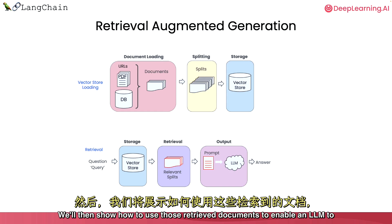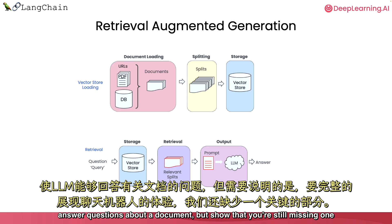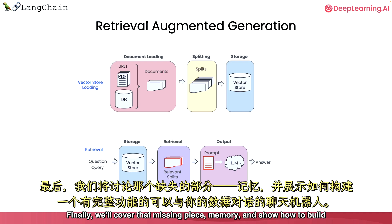We will then show how to use those retrieved documents to enable an LLM to answer questions about a document, but show that you are still missing one key piece in order to fully recreate that chatbot experience. Finally, we will cover that missing piece — memory — and show how to build a fully functioning chatbot through which you can chat with your data.